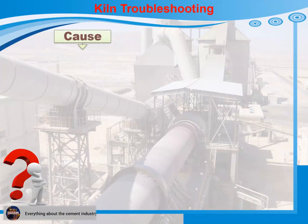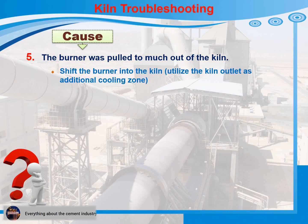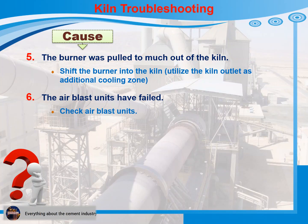Cause 5: The burner was pulled too much out of the kiln. Recommendations for action: Shift the burner into the kiln and utilize the kiln outlet as an additional cooling zone. Cause 6: The air blast units have failed. Recommendations for action: Check air blast units. Cause 7: Horseshoe is missing. Recommendations for action: Install horseshoe.